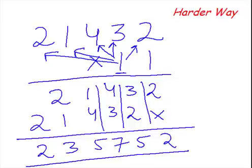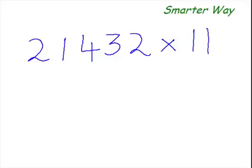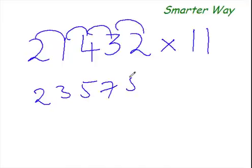So, let's see the smarter way of doing it. Then you will realize why I was calling this the harder way of doing it. The smarter way of multiplying any number with 11 is this. Watch me. This is my answer. Was it too fast for you to follow?